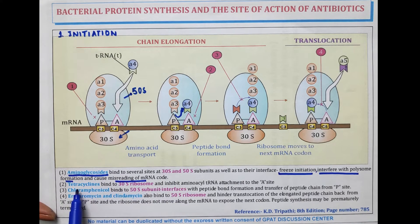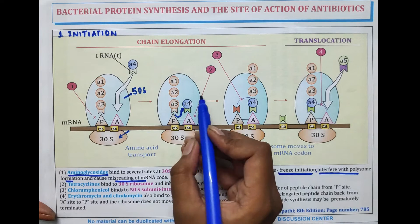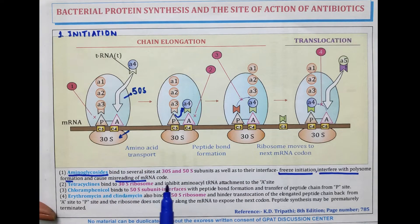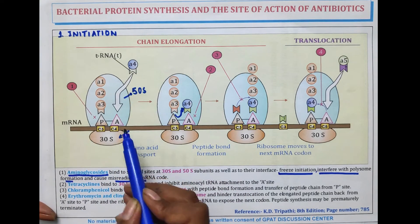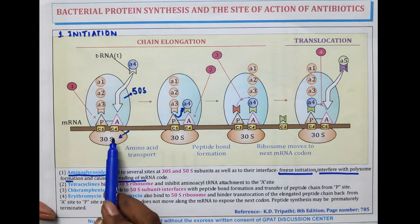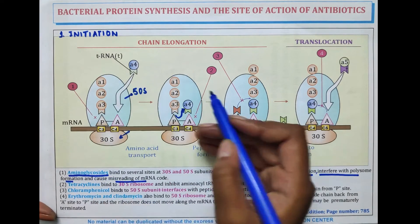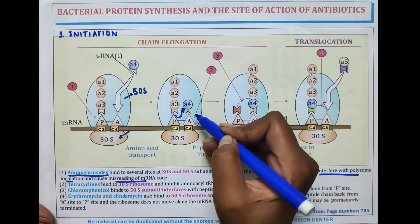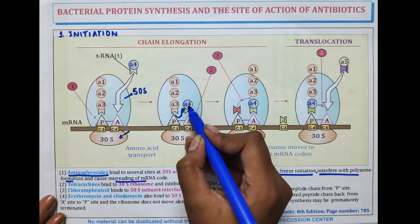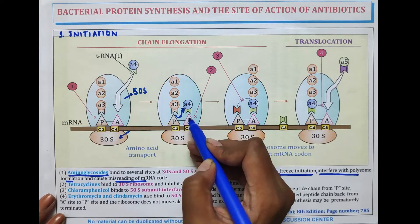The next antibiotic is tetracycline, which binds to the 30S ribosome and inhibits the aminoacyl-tRNA attachment to the A site. The tRNA is responsible for attachment of amino acids to the A site. Tetracycline inhibits the amino acid transfer RNA so that the amino acids are not attached to the A site. This is the representation of the mode of action of tetracycline — when A4, the new amino acid, is going to attach at the A site, tetracycline inhibits this step.